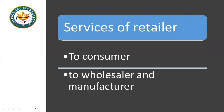The services of the retailer are for two types of people. One is for consumers, and the other involves the wholesaler and manufacturer. The wholesaler and manufacturer basically depend on the retailer. The retailer is a middleman channel connecting producers to consumers.